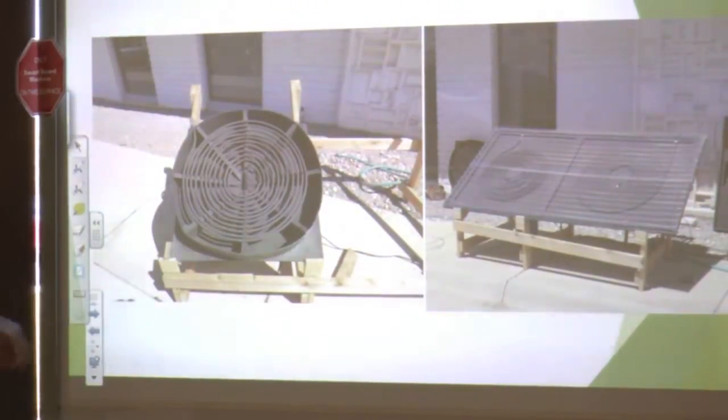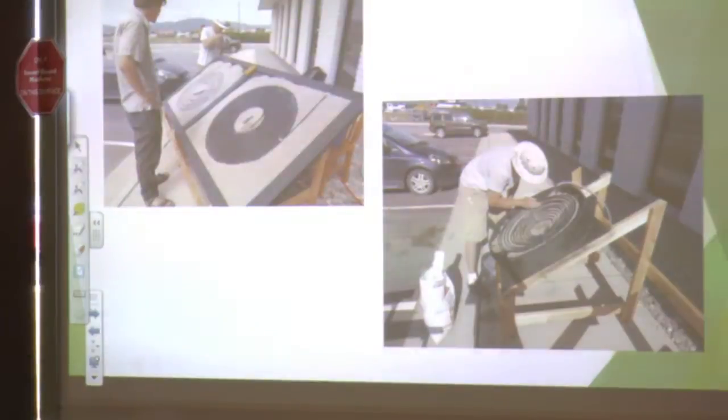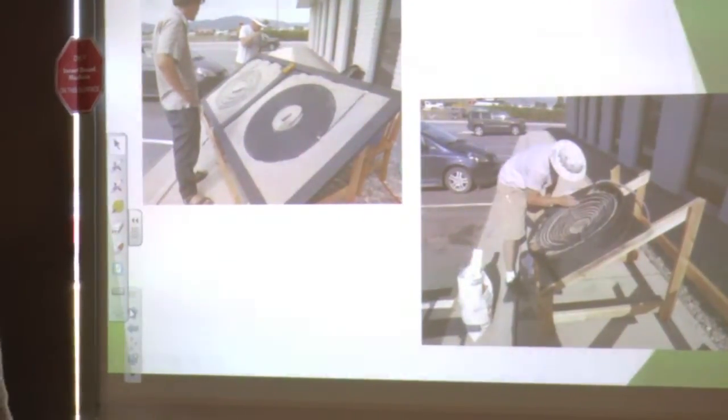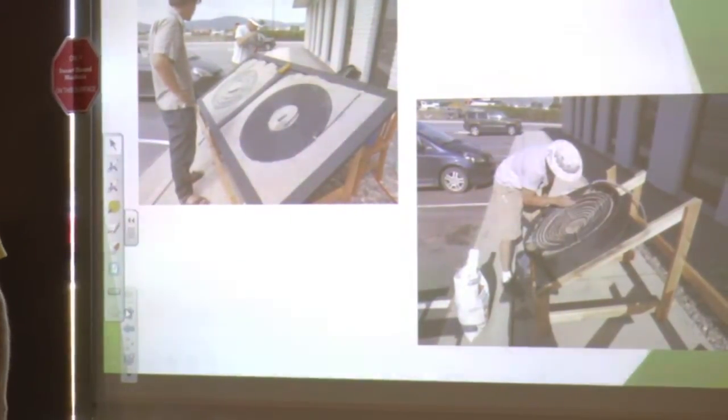Then we decided to put sand in it for some thermal mass to see what that would do. We definitely saw a little bit of a rise in all three systems with the sand in it. So the sand would heat up, and we had a lot of clouds coming through, and every time the clouds would come by, the solar insulation would drop dramatically. But the sand would continue to radiate heat to the tubing.